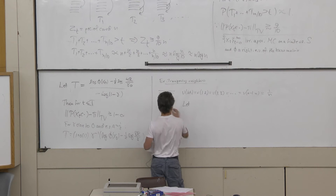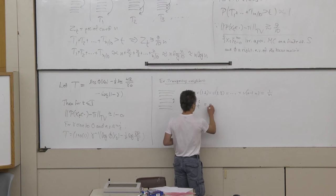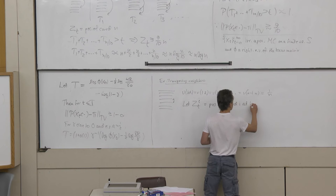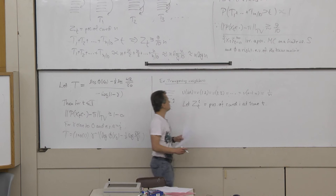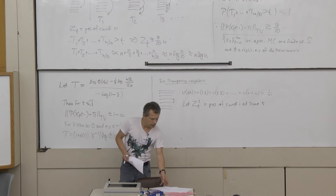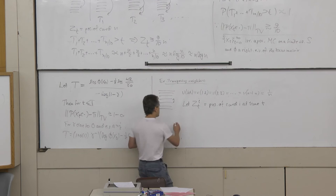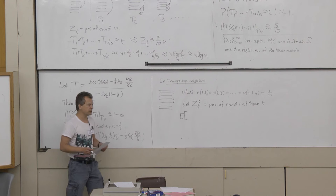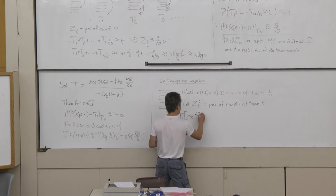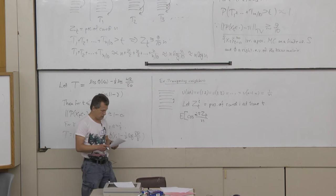Let Z_t^i be the position of card i at time t, where card i means the card starting in position i. You need some sort of inspiration to see this is a good idea, but let's look at the expectation of cosine(2π Z_t / N) — dropping the superscript i for now — given X_t, i.e., given the state of the deck at time t.